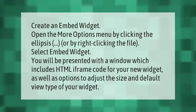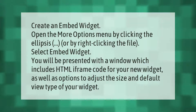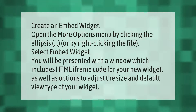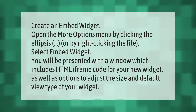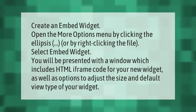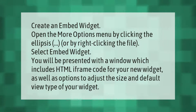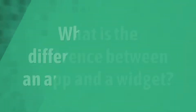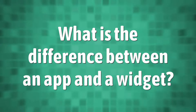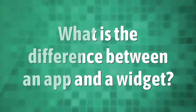To create an embed widget, open the more options menu by clicking the ellipsis or by right-clicking the file. Select 'Embed Widget.' You will be presented with a window which includes HTML iframe code for your new widget, as well as options to adjust the size and default view type of your widget.